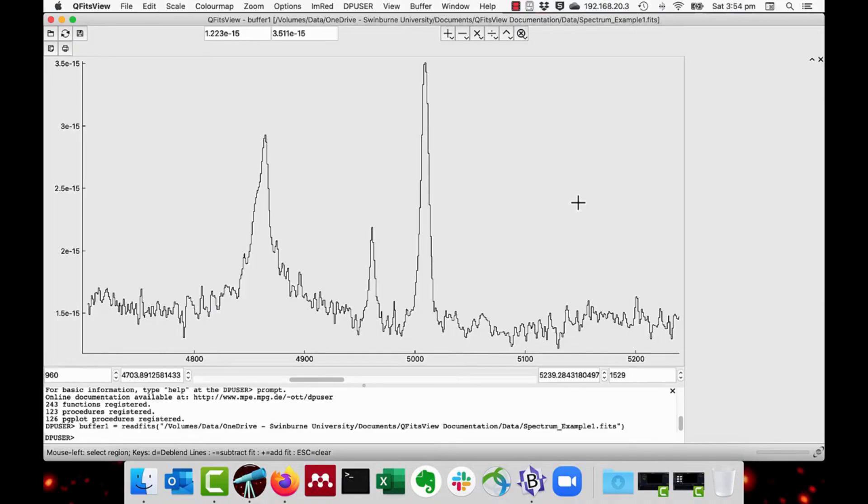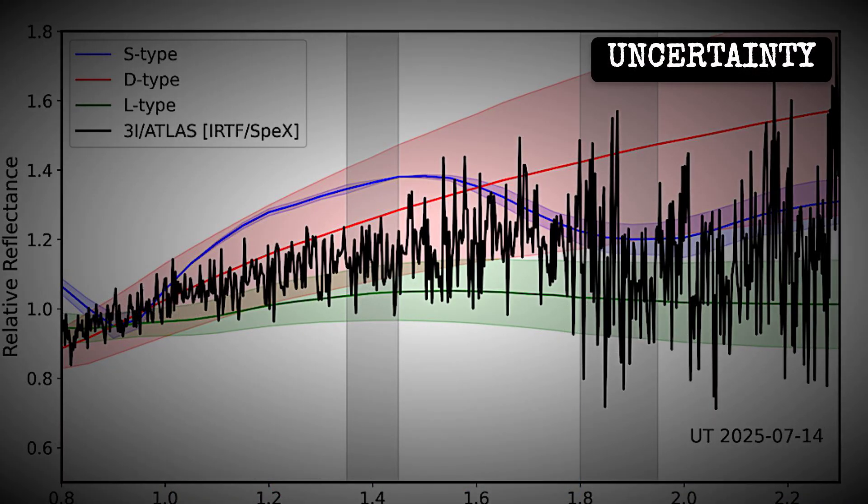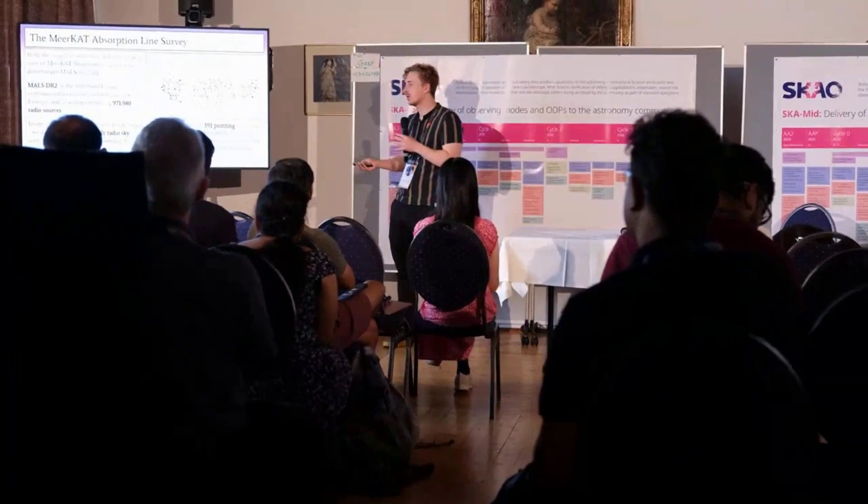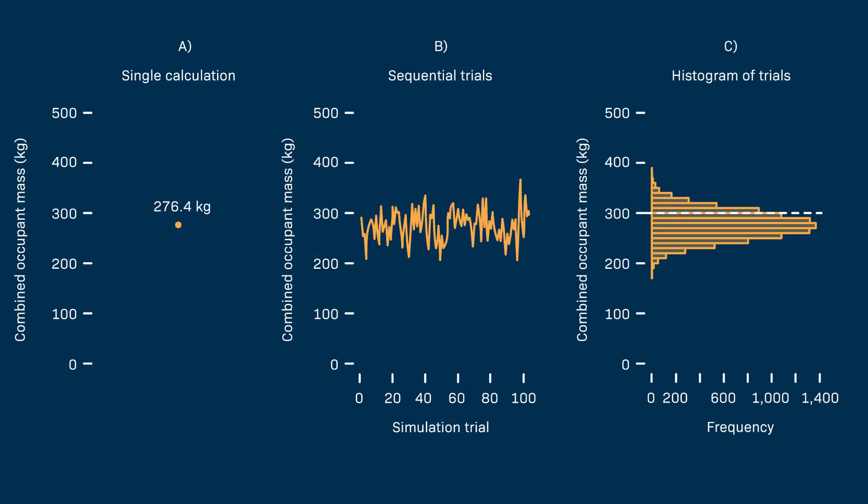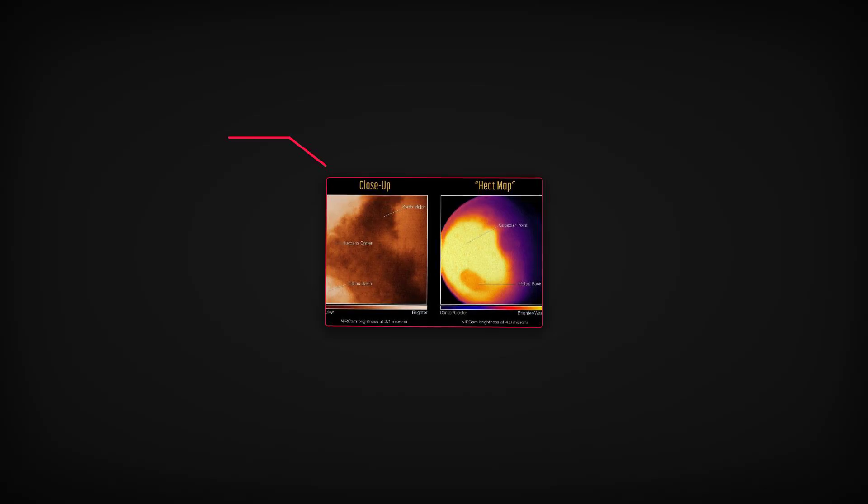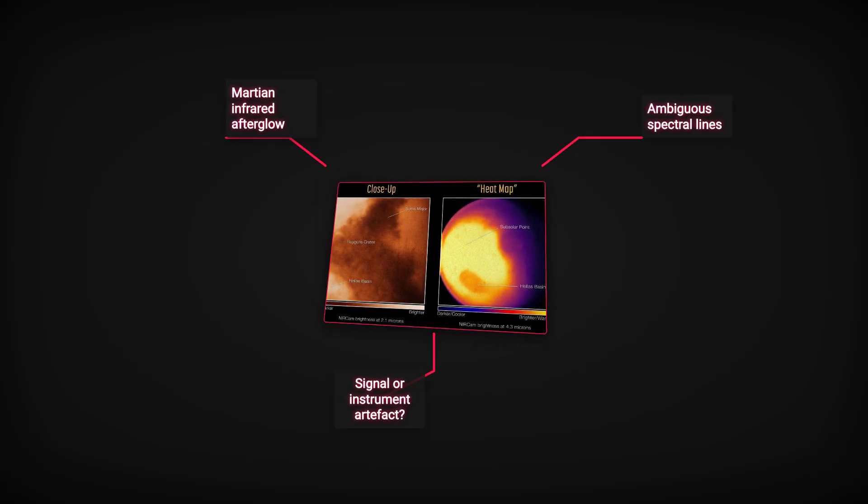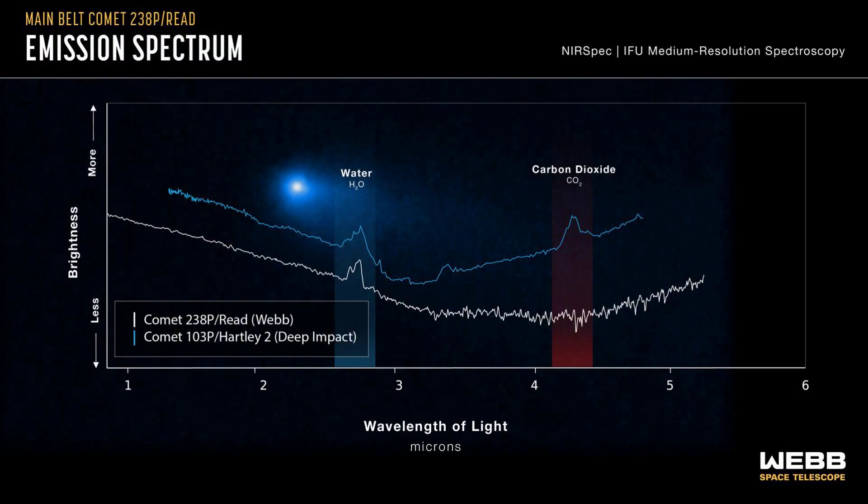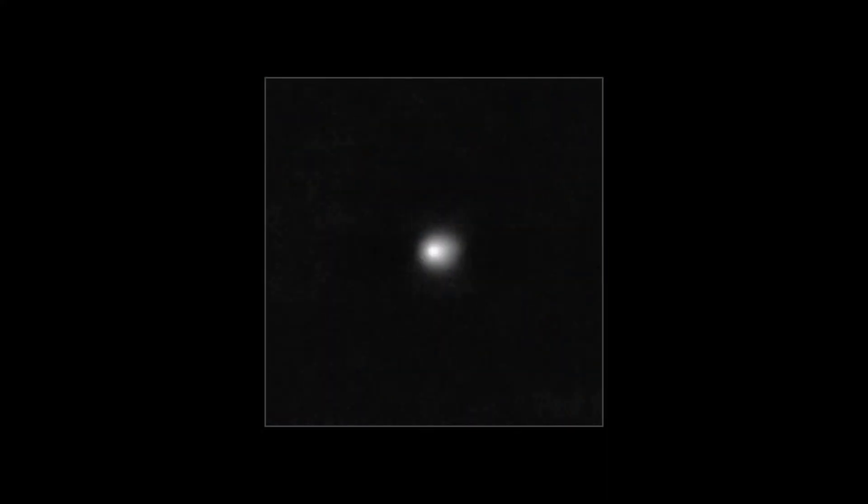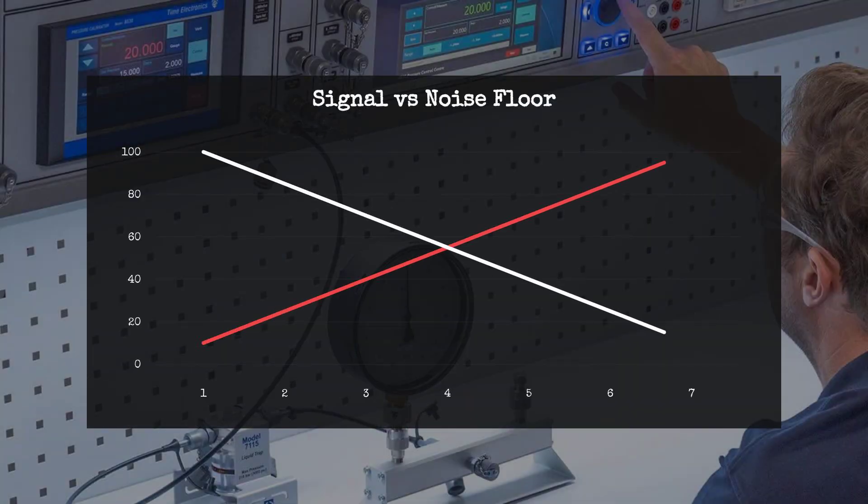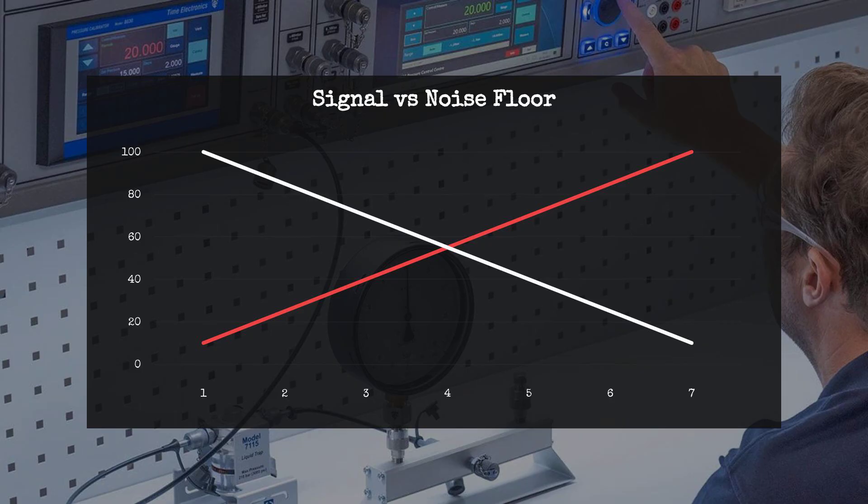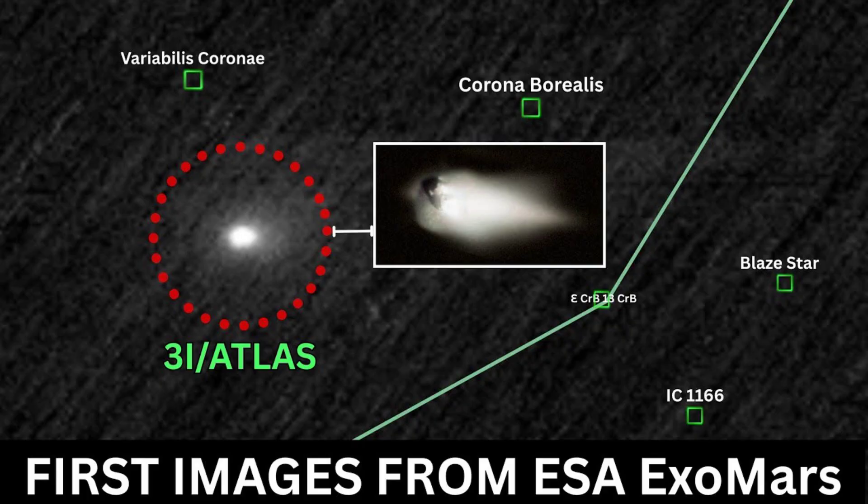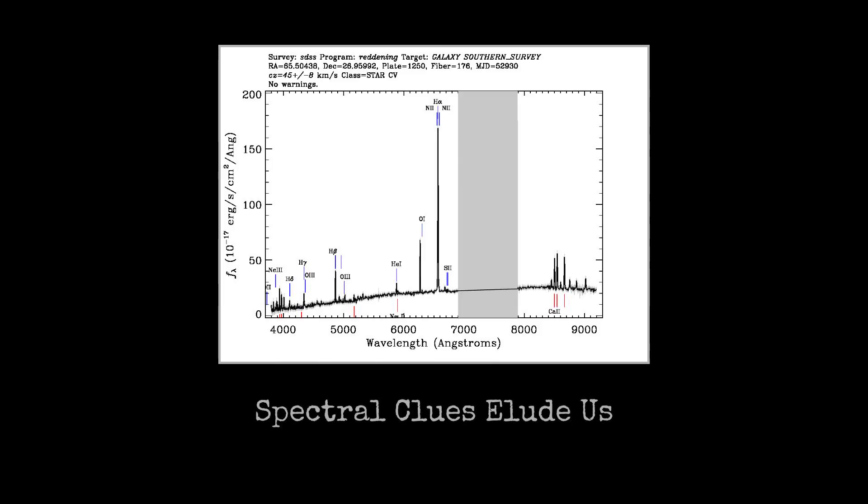Even after co-adding, the results left more questions than answers. Some hints of broad features appeared, but nothing rose far enough above the noise to claim a detection. The teams debated whether a faint bump was a real emission from the comet or just a statistical fluctuation. Mars' own atmospheric glow, especially in the infrared, complicated background subtraction. Each group ran new calibrations, checked for stray light, and compared their stacks to archival comet spectra. The conclusion: if 3I-Atlas was releasing gas, it was doing so at a level just at or below the edge of what these instruments could detect. The search continues, with deep stacking and new algorithms. But for now, the composition of this interstellar visitor remains an open question, its chemistry still hidden, waiting for a clearer signal.